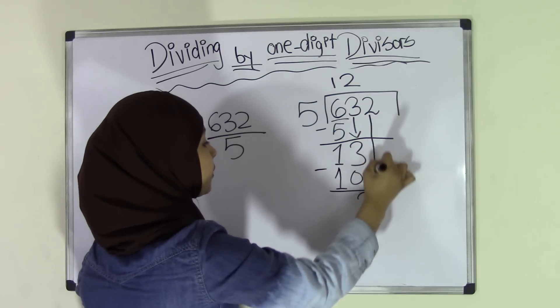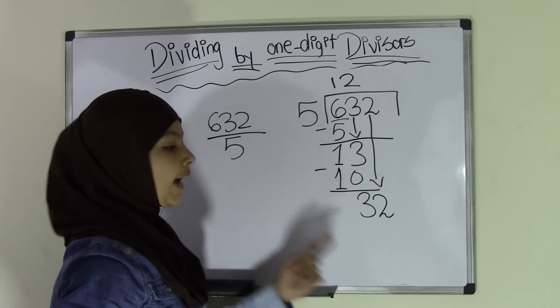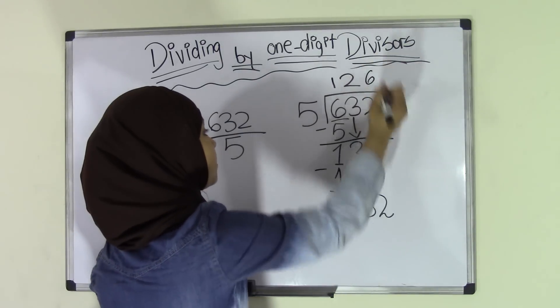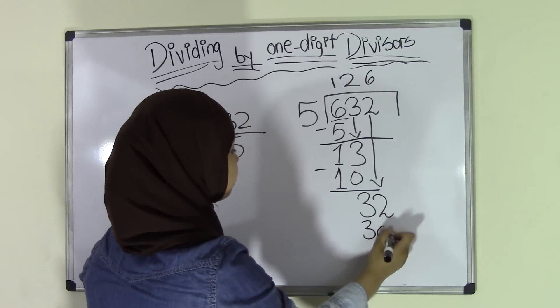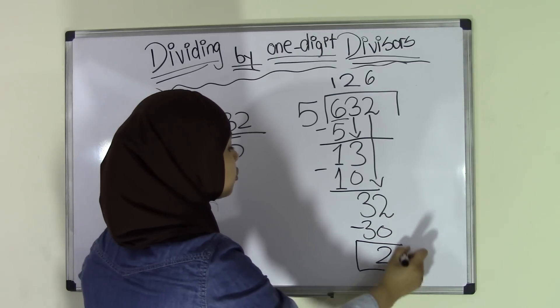And then we have 3 left. Now we're going to go back and bring the 2 down. So now we have 32. How many times does 5 go into 32? Six times because 5 times 6 is 30. So now we have 2.